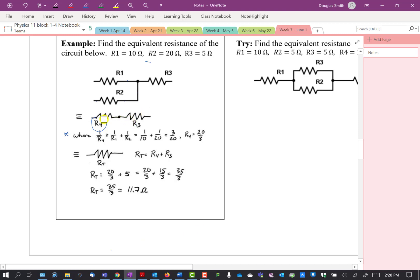So I now know this circuit here. And if I want the equivalent circuit or equivalent resistance for an R4 and R3 in series, I just add them up. So finally, the total resistance, RT, is R4 plus R3. So 20 thirds plus 5, you get 35 over 3 or 11.7 ohms.